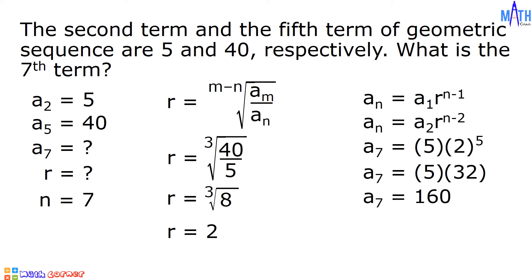Another way to solve for the seventh term: since the fifth term is equal to 40, multiply 40 by the common ratio 2 to get 80, which is the sixth term. Then 80 times 2 equals 160, giving us the seventh term.